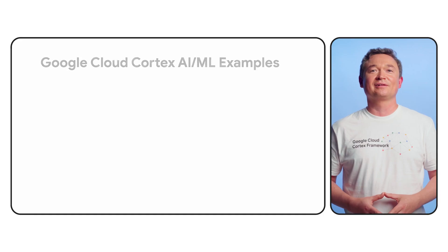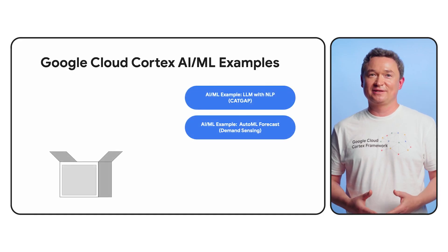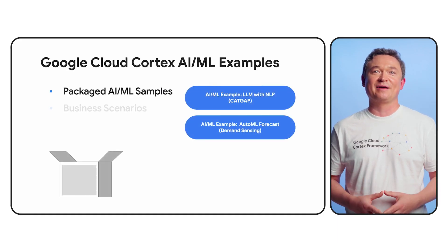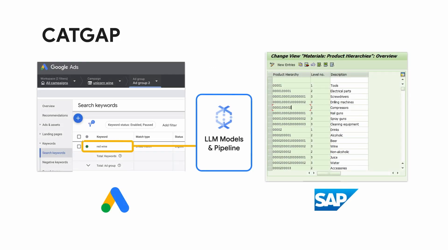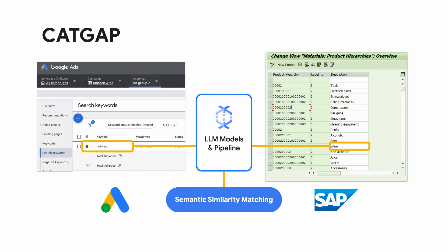Let's start with a few examples of real-life applications of machine learning by exploring some of the packaged machine learning content Cortex Framework has to offer. Google Cloud Cortex Machine Learning Packages provide fully customizable sample code and data models for common business scenarios. One example is Cortex Analytical Templates for Google Ads Pipelines, also known as CADGAP. It provides machine learning models and code for automating data matching for sales in SAP and Google Ads performance.